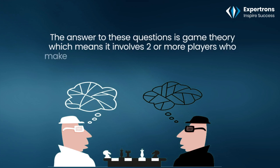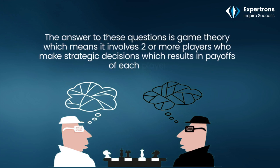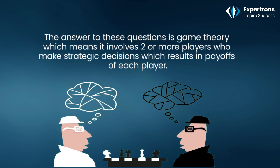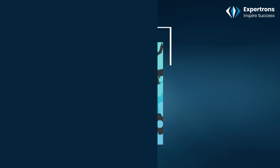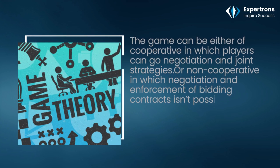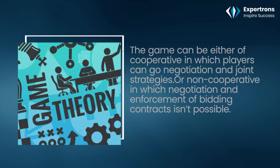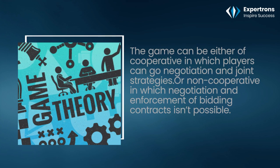Game theory involves two or more players who make strategic decisions, which results in payoffs for each player. The game can be either cooperative, in which players can negotiate on joint strategies, or non-cooperative, in which negotiation and enforcement of binding contracts isn't possible.